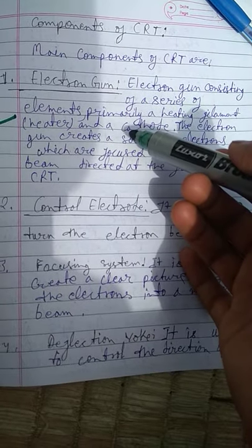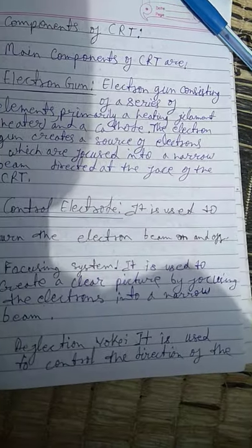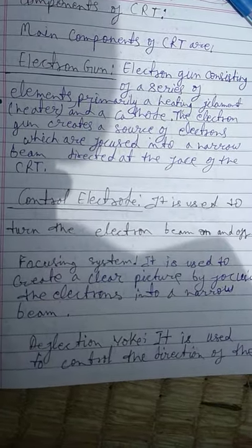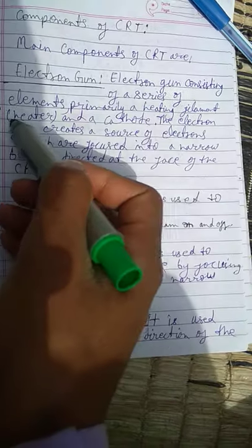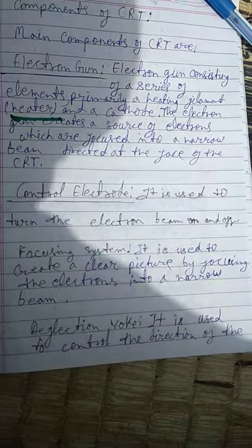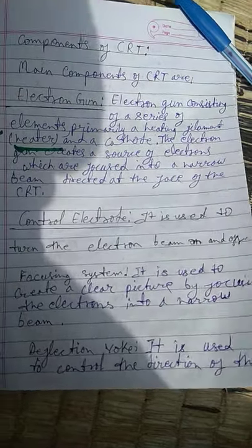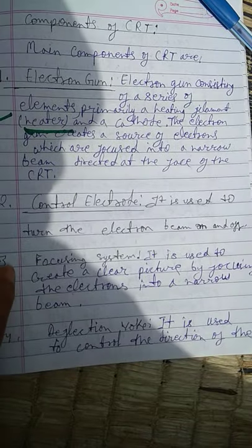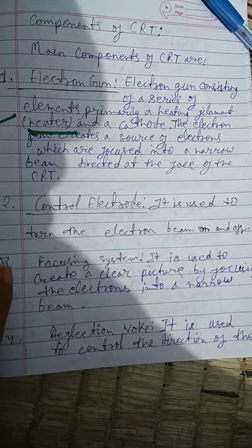The electron gun consists of a series of elements — primarily a heating filament, a heater, and a cathode. The electron gun creates a source of electrons which are focused into a narrow beam directed at the face of the CRT.